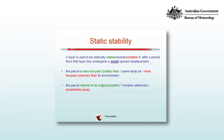Stable environments inhibit convective motion. Neutral environments neither inhibit nor encourage it. And unstable environments mean that convection can occur for parcels that are perturbed with a small displacement.